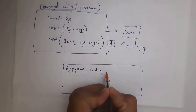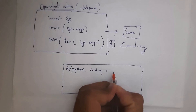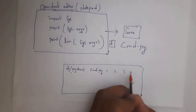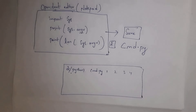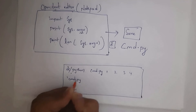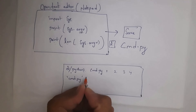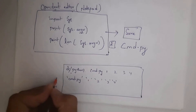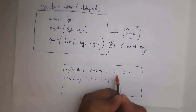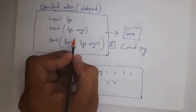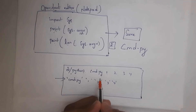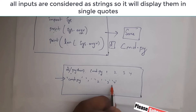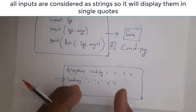Here you can pass multiple number of inputs. For example, I want to give inputs like 1, 2, 3, 4 — don't use commas, just give 1 space 2 space 3 space 4. Whenever you click Enter, you will get the output 'cmd.py' first, because my file name is cmd.py. So at first you will get cmd.py in single quotations, then input 1, input 2, input 3, and input 4. It will display all those inputs in single quotations.